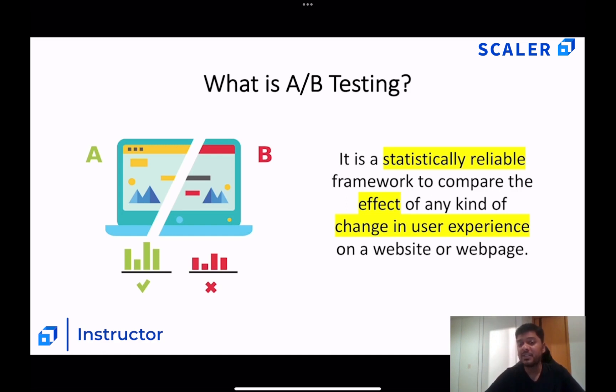AB testing is a statistically reliable framework to compare the effect of any kind of change in user experience on a website or a web page. So the important parts are highlighted here, which you should really pay attention to. The first important part is change in user experience. So if you are making any kind of change in user experience on a website or a web page and if you want to understand what effect will it have on the user, will it be a positive effect, a neutral effect or a negative effect and do so in a statistically reliable and robust manner, then AB testing or AB experimentation is the go-to tool for you.